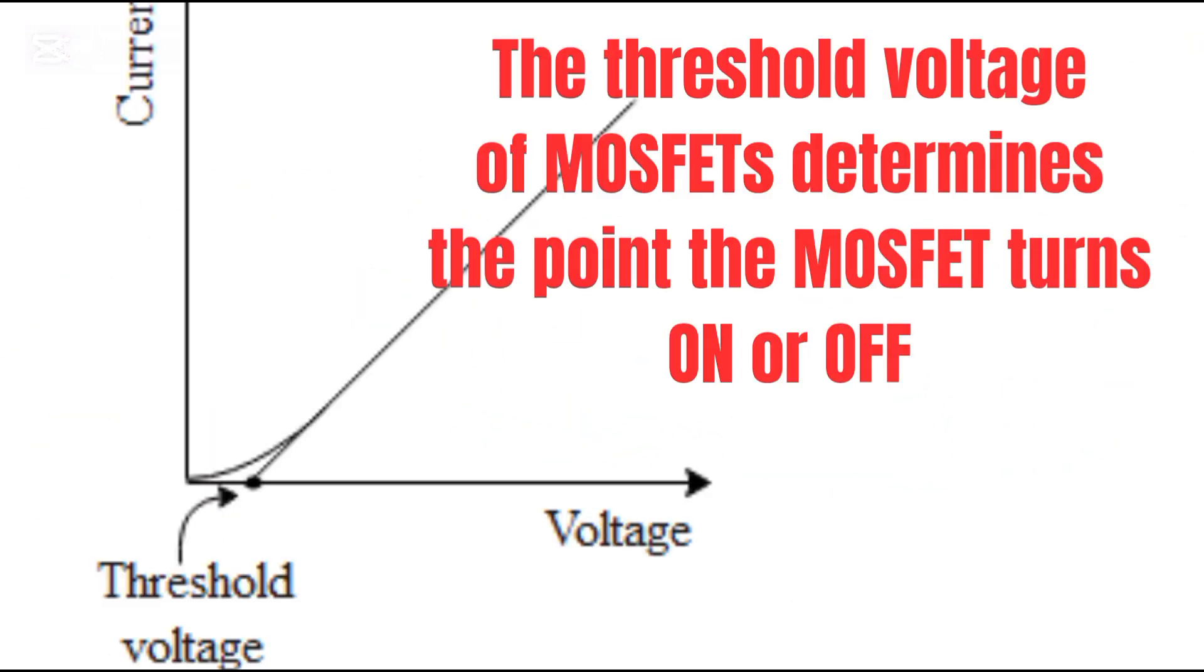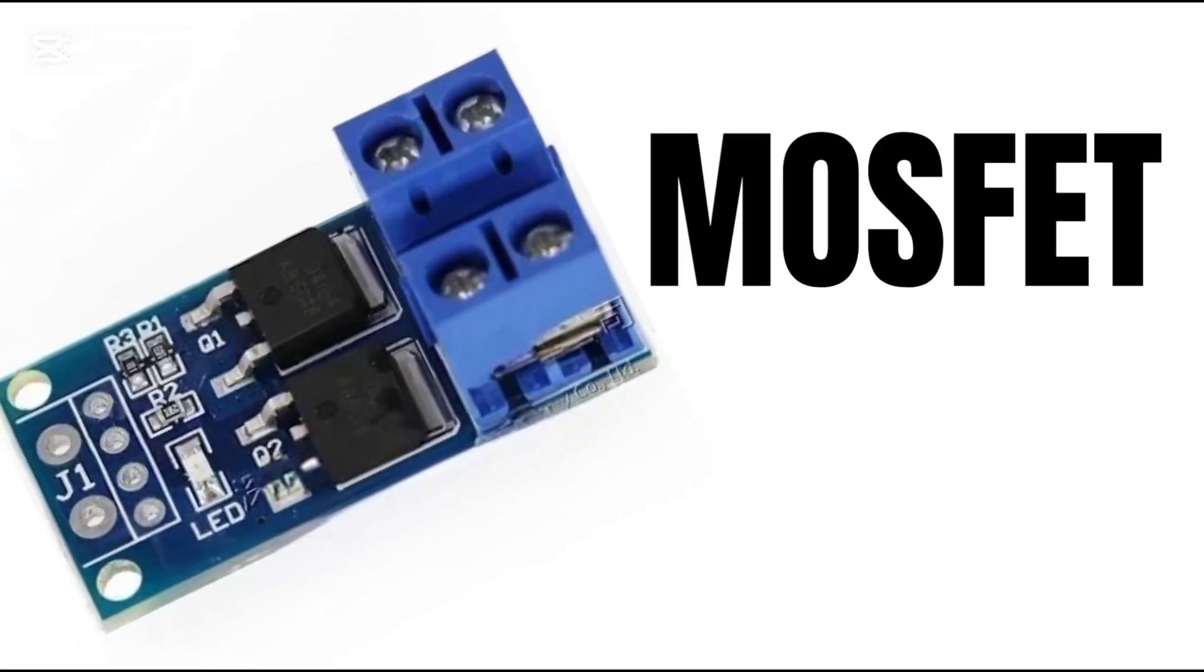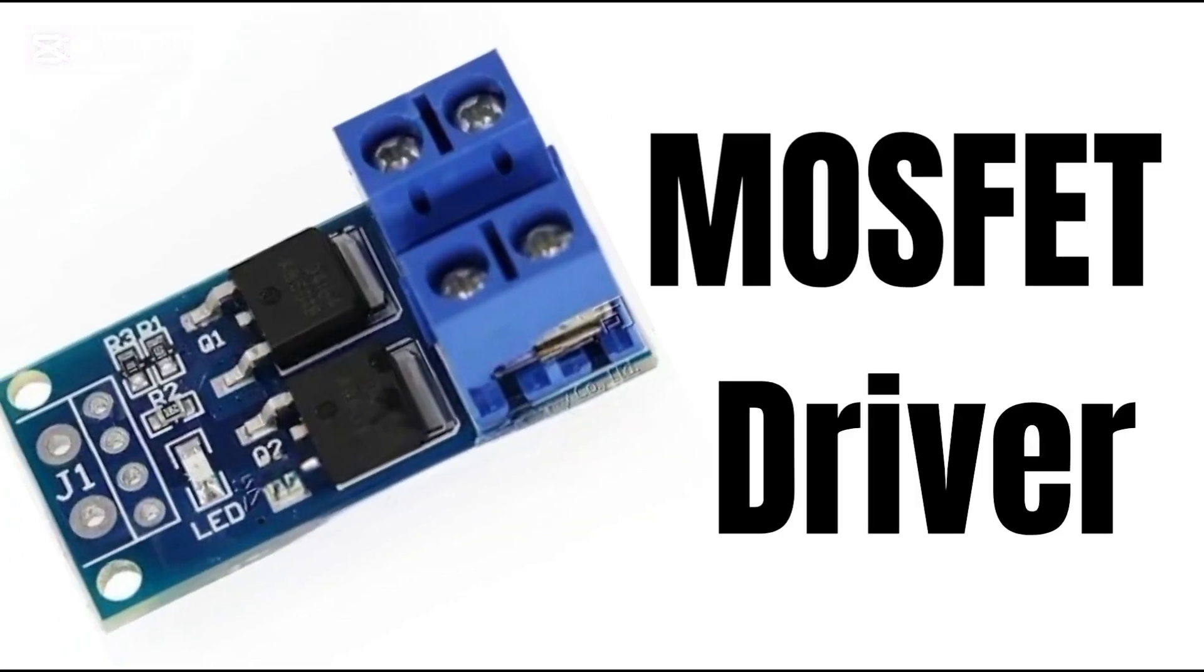A MOSFET's gate requires a specific voltage level to turn on fully. That's why MOSFET drivers are often used to ensure efficient switching and to avoid unnecessary heat dissipation.